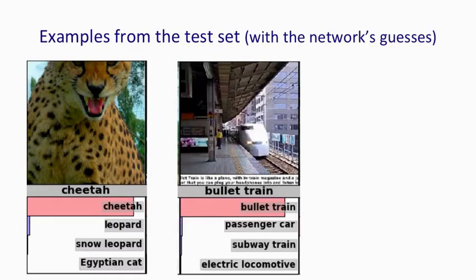Here's an example the other way around — there are many objects in the image and the object of interest is only a very small fraction of the pixels. The network correctly says 'bullet train', but also has other bets like subway train or electric locomotive, which are pretty sensible. If you look at the image, there are lots of other things that could be labelled, like the roof, the pillar supporting the roof, the pedestrian, or the large apartment block in the background. In these kinds of images, you really have to cope with the fact that there are lots of alternative targets.